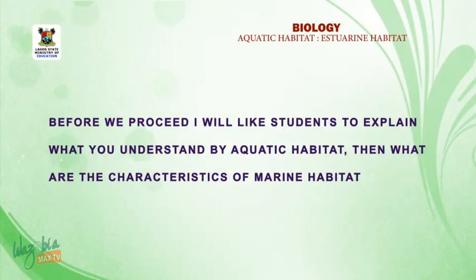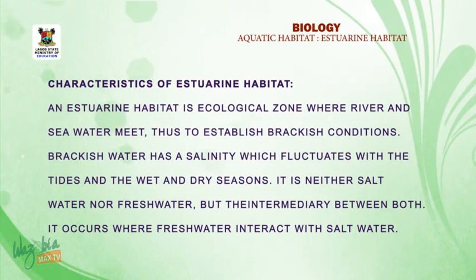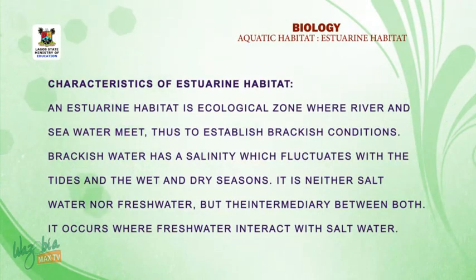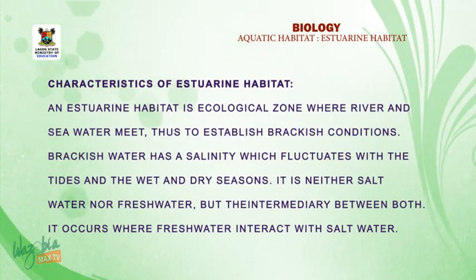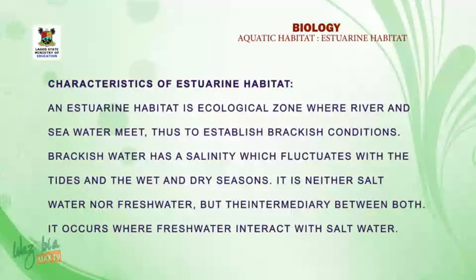Thank you. Now, characteristics of estuarine habitats: an estuarine habitat is an ecological zone where river water and sea water meet — a point where river water, which is fresh water, and sea water, which is salt water, meet. This creates brackish conditions. Brackish water has a salinity which fluctuates with the tides and the season — that is, the wet and dry season.